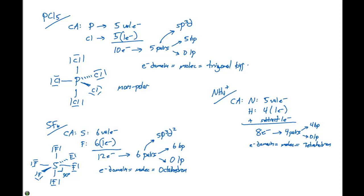So our electron domain geometry is going to equal our molecular geometry, and this is going to be a tetrahedron. The hybridization, since we have four pairs, is going to be sp3.